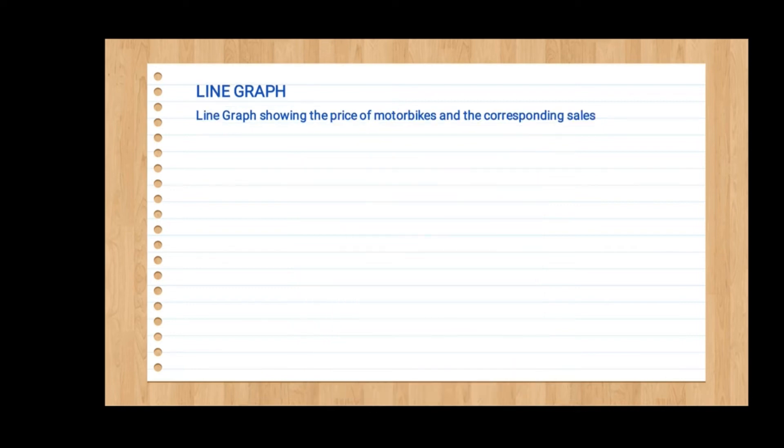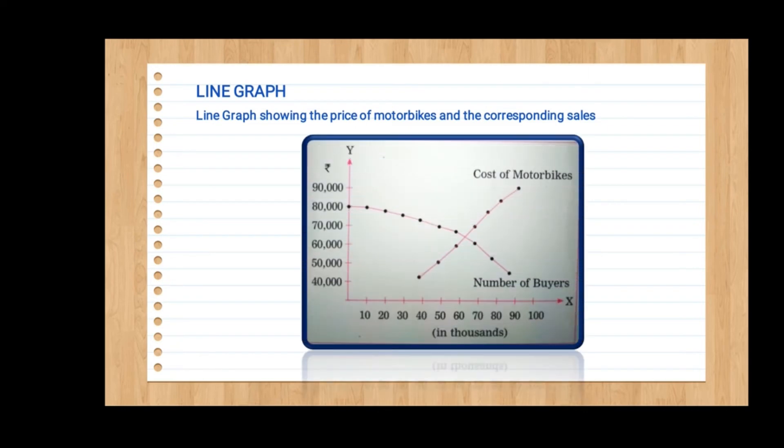Next is called a line graph. This line graph shows the price of motorbikes and corresponding sales. Most students have this type of form — they do it in mathematics statistics. So most of them know what a line graph is.